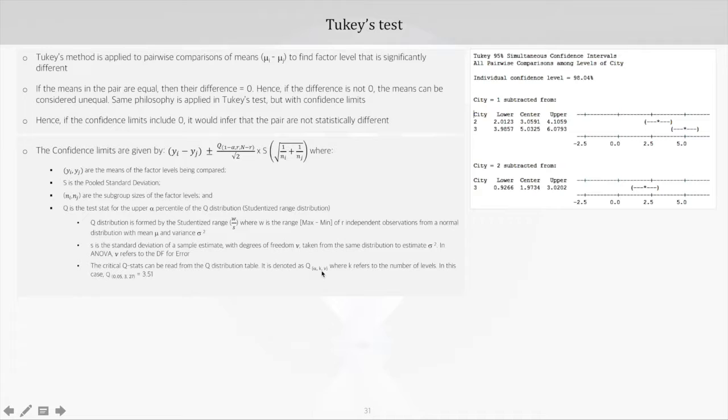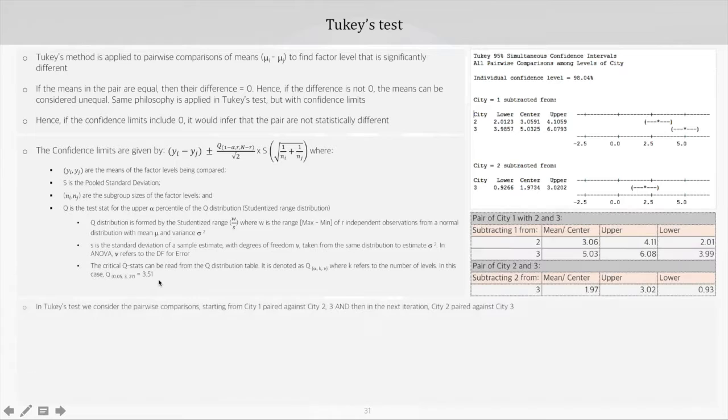It's denoted as q characterized by alpha, k (where k is the number of levels—in this case we have three cities), and nu (degrees of freedom for observations, which was 27 in the ANOVA table). We look this up in the q distribution table and get 3.51 as the q stat.